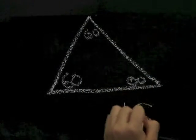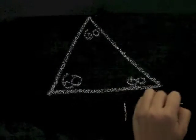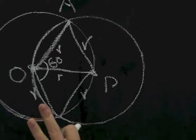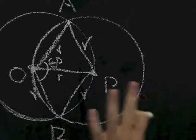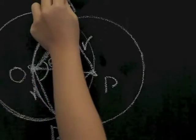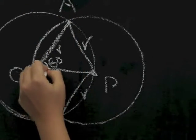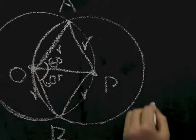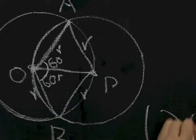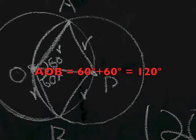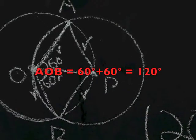So now I see that angle AOB is no longer a random angle. Without knowing anything about these circles — no measurements — I can tell that angle AOB is 60 plus 60, or 120 degrees. So there you go. The radius solves everything. Go solve some circle problems.